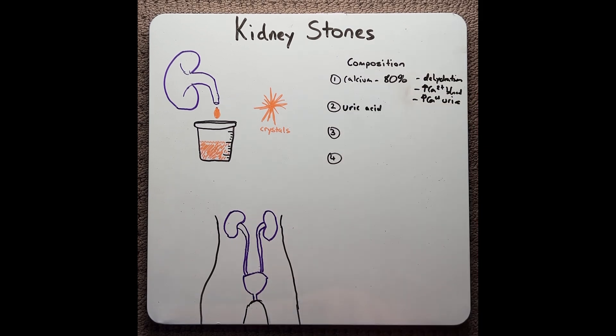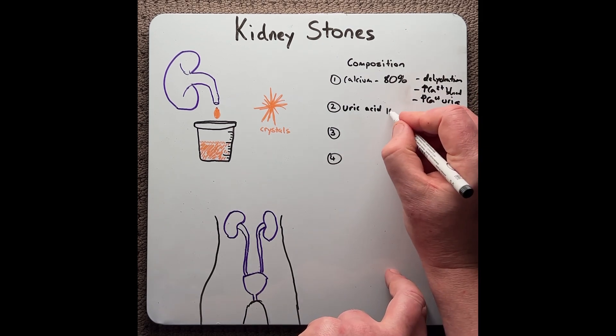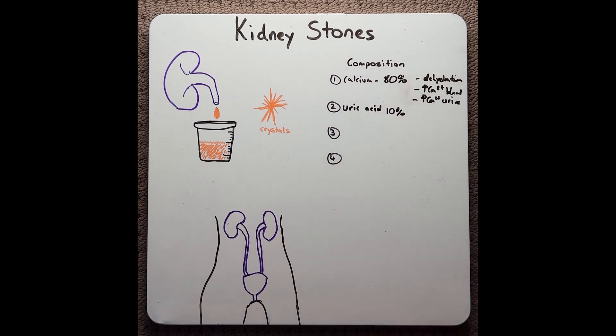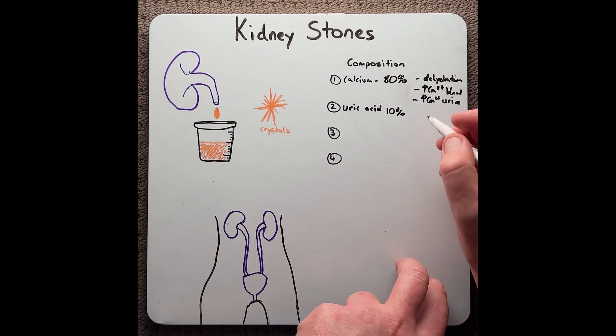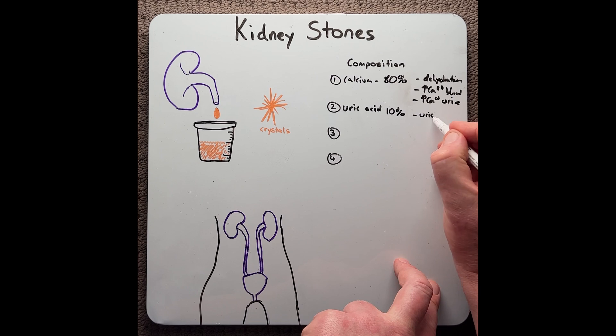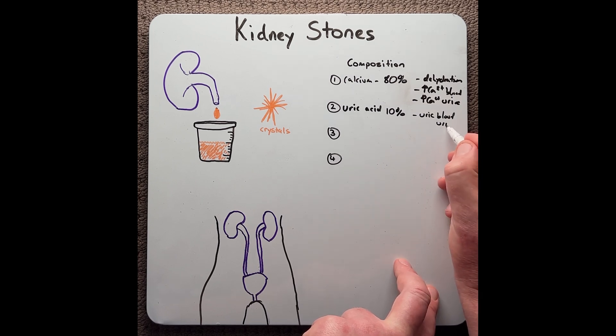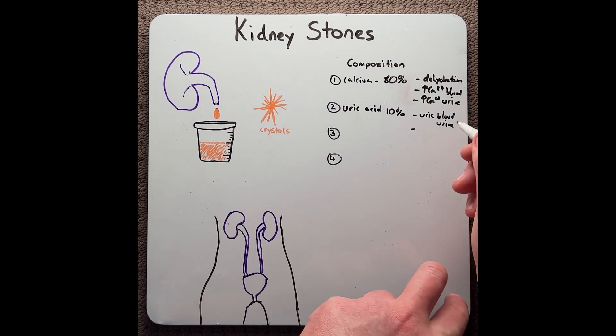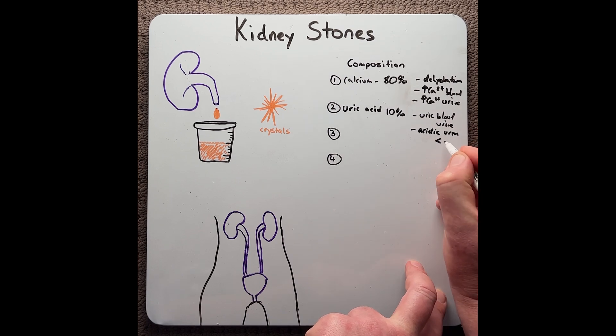The second type of stone are uric acid-based stones, which are approximately 10% of all stones. These are associated with conditions that lead to an increase of uric acid in the blood or urine, or conditions that lead to acidic urine, that's less than 5.5.